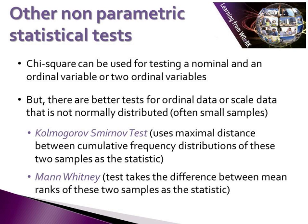The two-sample Kolmogorov-Smirnov test and the Mann-Whitney test are two of the most useful tests and serve as the general non-parametric alternatives to the two-sample t-test. They can be used to test whether two samples come from the same distribution. The KS test uses the maximal difference between cumulative frequency distributions of the two samples as the test statistic, while the Mann-Whitney test takes the difference between the mean ranks of the two samples. These are two slightly different approaches and we'll look at each one.